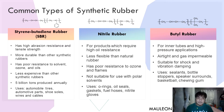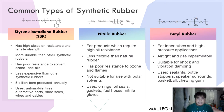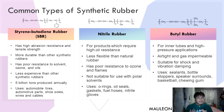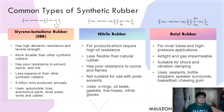Among the common types of synthetic rubber, we have Styrene-Butadiene Rubber or SBR. It has characteristics of high abrasion resistance and tensile strength, and is more durable than other synthetic rubbers. Although it has poor resistance to solvents, ozone, and oils, it is less expensive. About 5 billion tons are produced annually, and it is commonly used on automobile tires, automotive parts, shoe soles, wires, and cables.